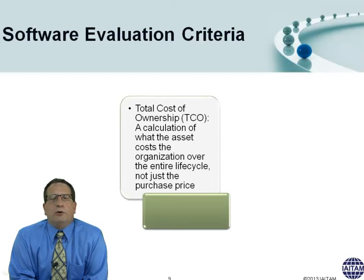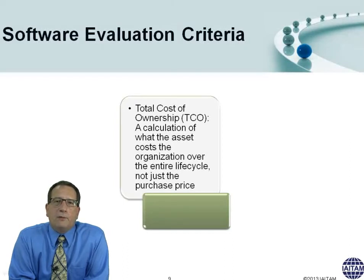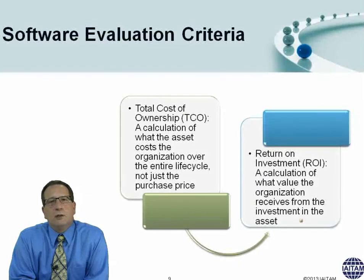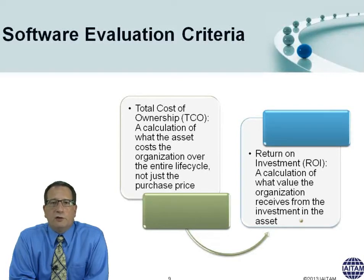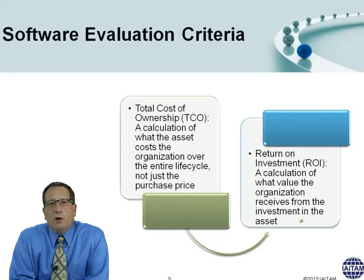Software evaluation criteria: when asking whether to allow software into your organization, one key question is total cost of ownership — how much will this software cost over its life? The 80-20 rule applies here: 20% of the total cost of ownership is in the initial purchase, and 80% is in maintenance and support. This ties into return on investment — the value the organization gets by purchasing this non-standard software. You want to project both ROI and TCO in the justification document.